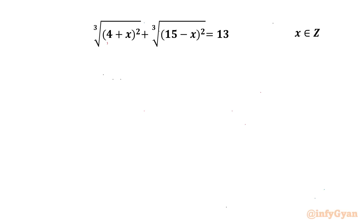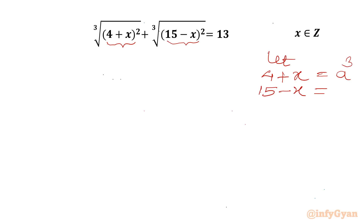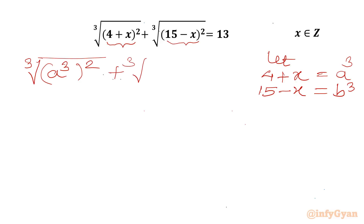I will consider the bracket (4 + x) as a³ and (15 - x) as b³. So let 4 + x = a³ and 15 - x = b³. I can write our equation as cube root of a³ whole squared, plus cube root of b³ whole squared, equal to 13.